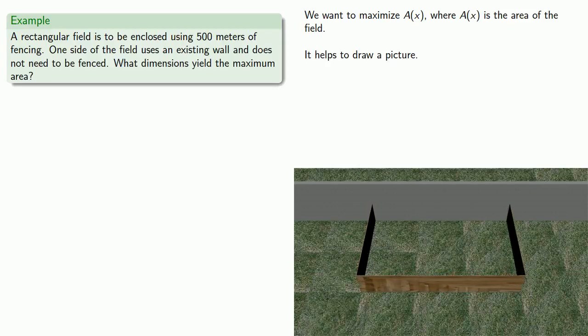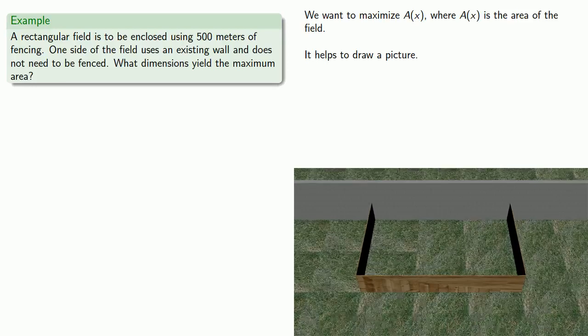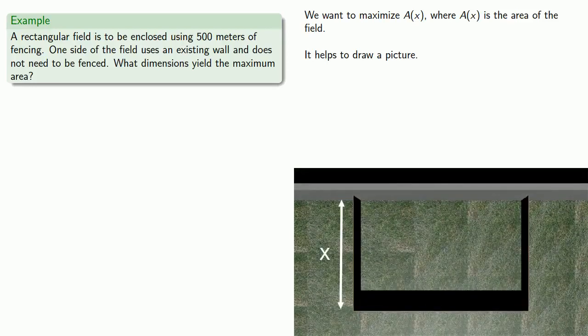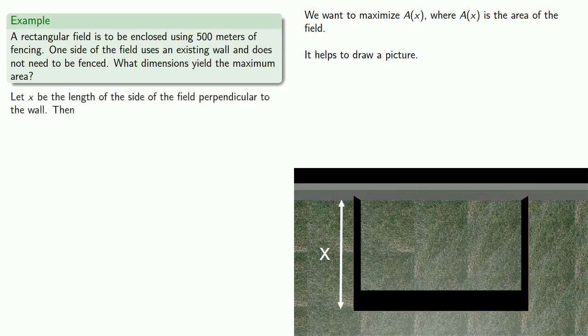So in order to construct the function, I'll need to tell you what x is. So since this is going to be some sort of rectangular field, maybe I'll let x be the length of the side of the field that's perpendicular to the wall. No reason for that. It's just the first side of the field I happen to draw. So we'll call it x.